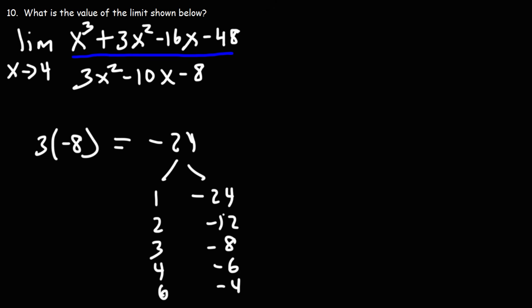Now notice that 2 and negative 12 add up to negative 10. So those can be the factors we're going to use. Let's replace the middle term negative 10x with negative 12x plus 2x. The order in which you put these two really doesn't matter. It's more of a preference. You can still get the same answer if you wrote it in reverse.